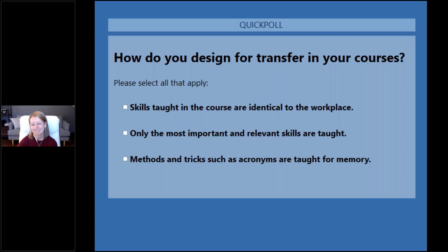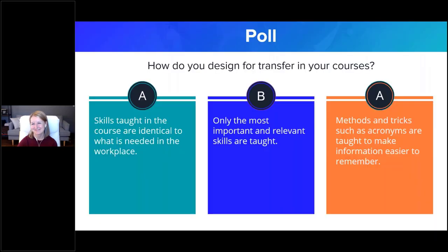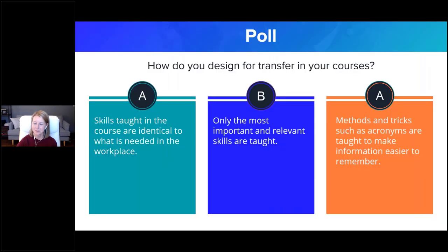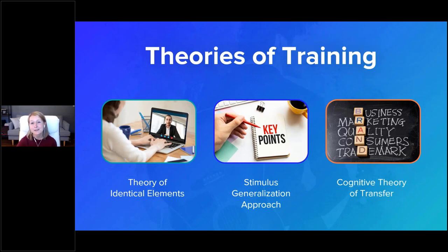Time's up — here are the results: 66% said skills taught in the course are identical to the workplace, 63% said only the most important and relevant skills are taught, and 40% said methods and tricks such as acronyms are taught for memory. We've got quite a spread. It looks like we're seeing an assortment of methods used in trainings, which is to be expected given the variety of goals associated with training.